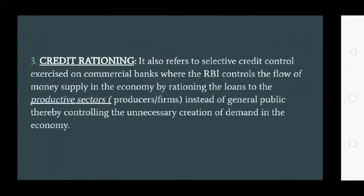The third and last qualitative instrument is credit rationing — it refers to selective credit controls exercised on commercial banks, where RBI controls the flow of money supply in the economy by restricting loans to the productive sectors or producer firms instead of the general public, thereby controlling the unnecessary creation of demand in the economy.